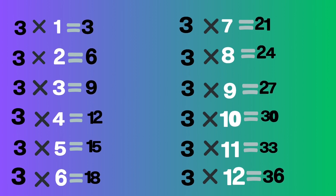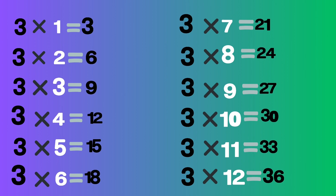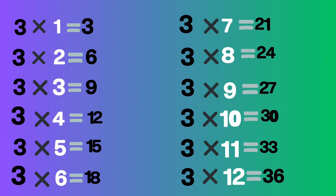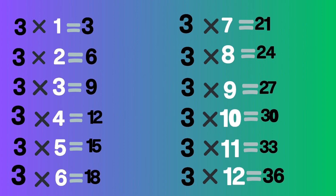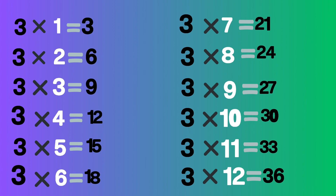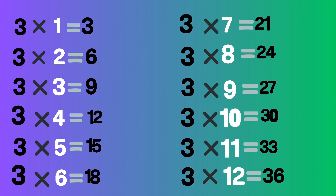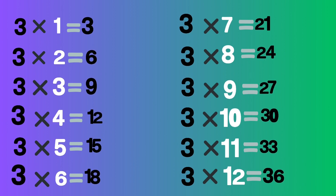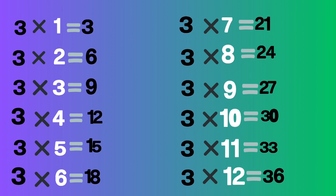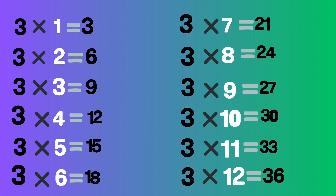3 ones are 3, 3 twos are 6, 3 threes are 9, 3 fours are 12, 3 fives are 15, 3 sixes are 18, 3 sevens are 21, 3 eights are 24, 3 nines are 27, 3 tens are 30, 3 elevens are 33, 3 twelves are 36.